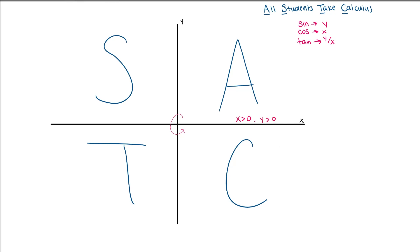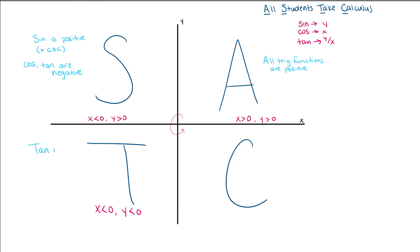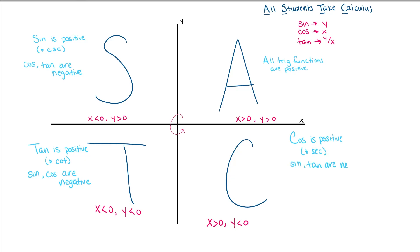In our first quadrant, the A stands for 'all' — that means all of our trig functions are positive. In quadrant 2, we have 'students,' or S — that means our sine function is positive, which includes cosecant, the reciprocal of sine. Quadrant 3 is 'take,' or T — our tangent is positive, including the reciprocal cotangent, and sine and cosine are negative. In quadrant 4, we have 'calculus,' or C — cosine is positive, which includes the reciprocal secant, and sine and tangent are negative.